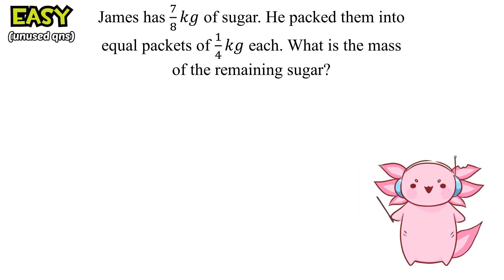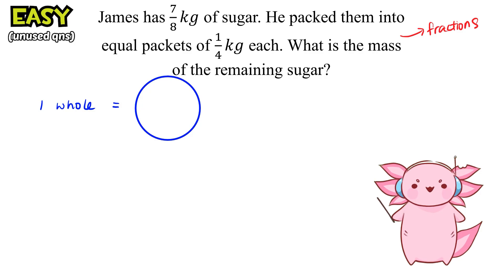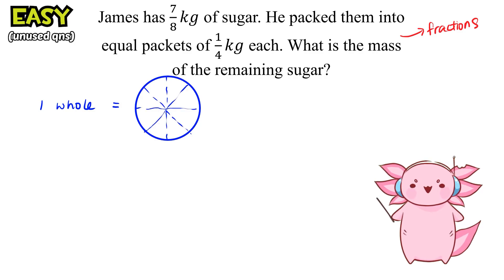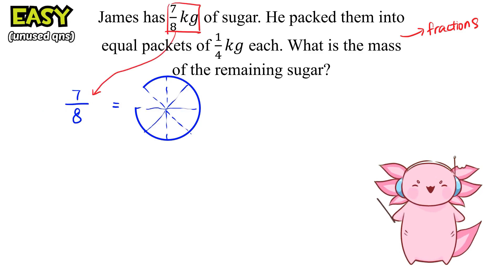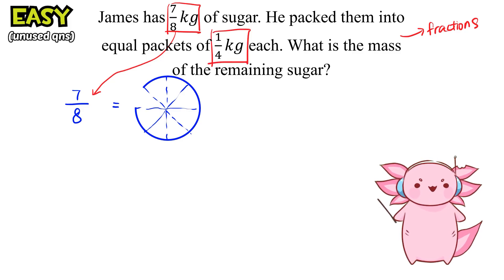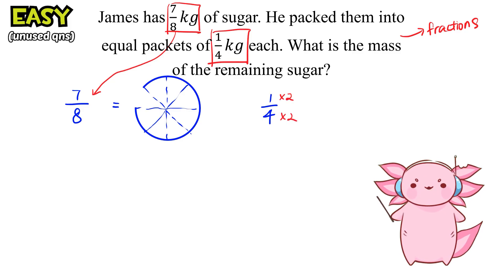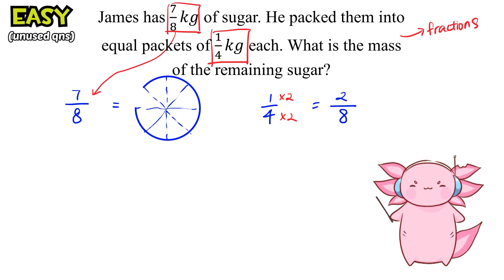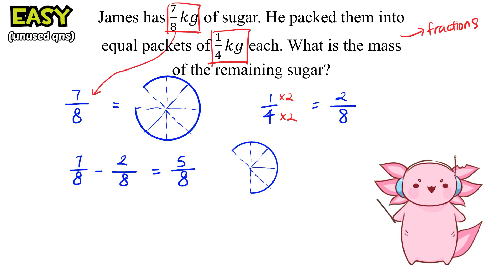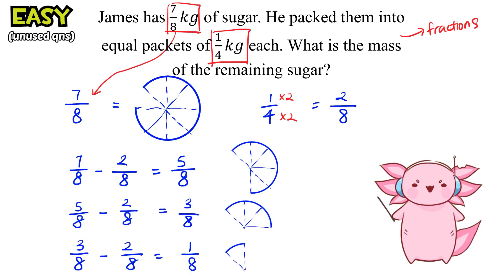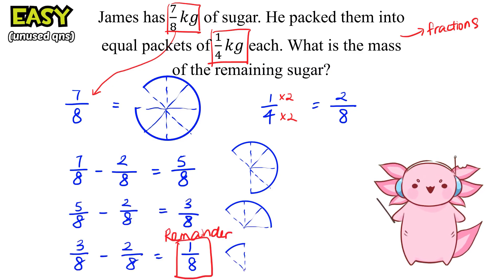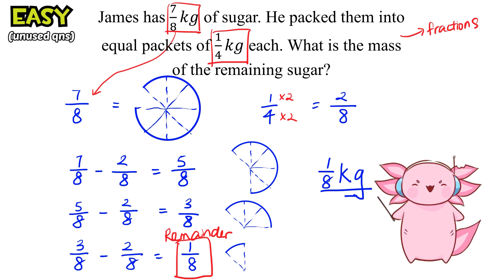This is a question testing on the understanding of fractions. Imagine 1 whole is a big pizza cut up into 8 slices. 7 over 8 is basically just 7 slices. Since we want to change 1 fourth into eighths, we multiply top and bottom by 2, so 1 over 4 equals 2 over 8. If we keep taking away 2 slices, the remainder is 1 slice, which is 1 over 8.